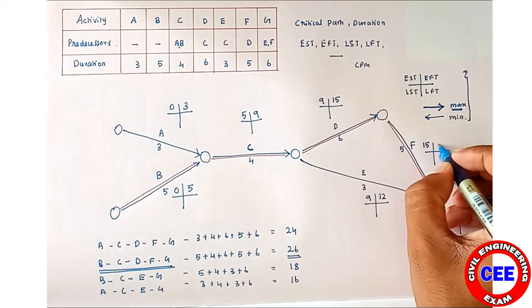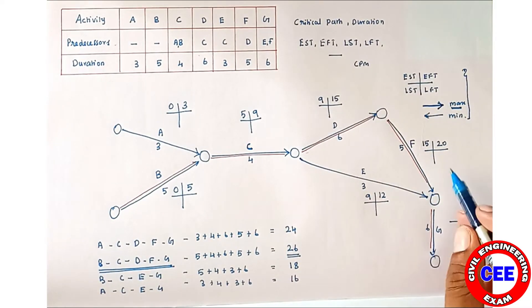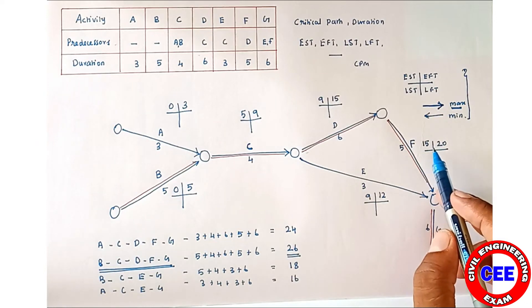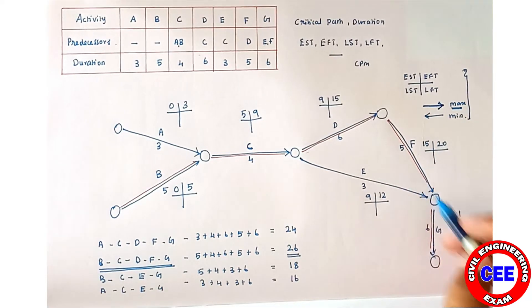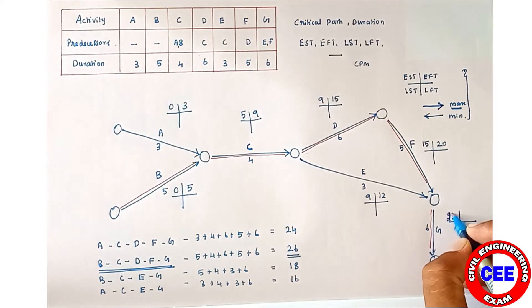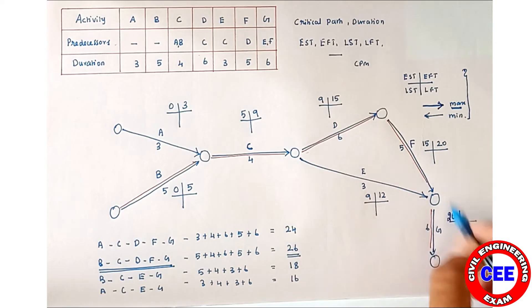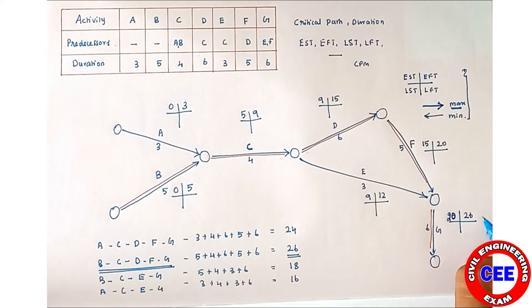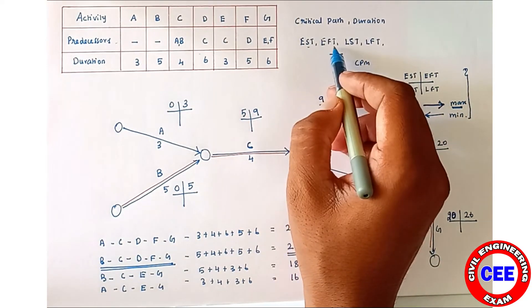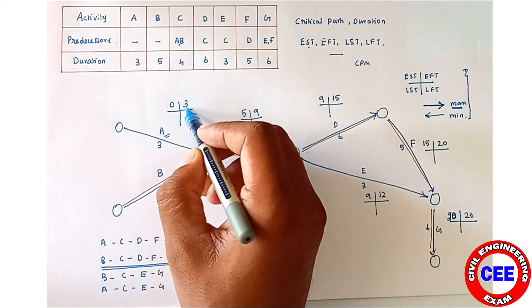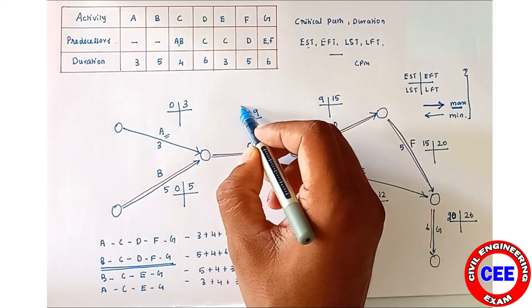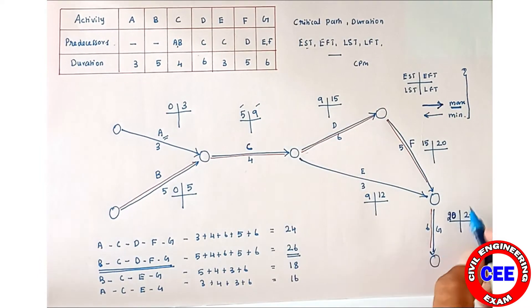Then EST of F = 15, and EFT of F = 15 + 5 = 20. For G activity, the EST value is taken from the EFT of its preceding activities E and F, which are 12 and 20. In the forward direction we take the maximum, so EST of G = 20, and EFT of G = 20 + 6 = 26. So for activity A: EST = 0, EFT = 3. For C: EST = 5, EFT = 9. For G: EST = 20, EFT = 26.